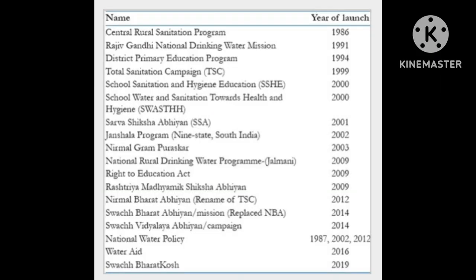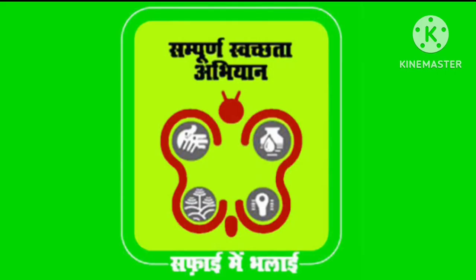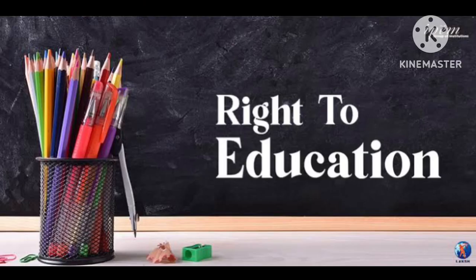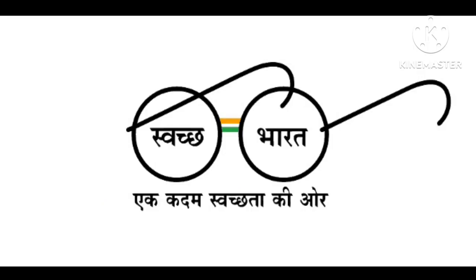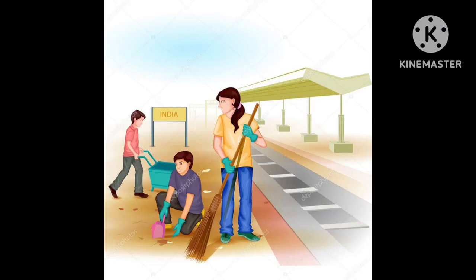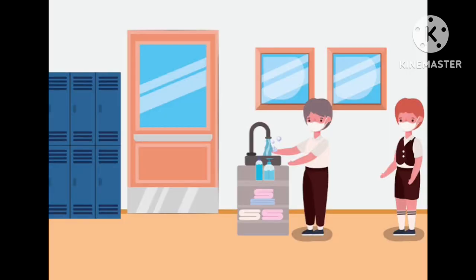In India, a number of schemes were launched: the Central Rural Sanitation Programme in 1986, the Total Sanitation Campaign (TSC) in 1999, School Water and Sanitation Towards Health (SWASTH), the Right to Education Act 2009, Nirmal Bharat Abhiyan 2012, and Swachh Bharat Mission 2019, the latest one by Prime Minister Narendra Modi. It is focused on a clean India, which also implicates cleaner education institutions for children.